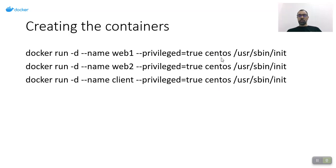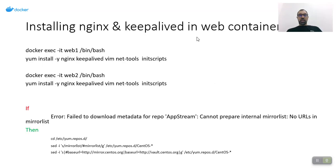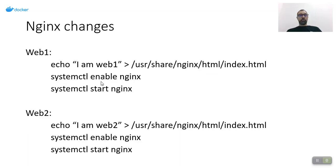I created three containers using docker run, named web1, web2, and web3. I used a CentOS image — you can use Ubuntu, CentOS, or any flavor. I installed nginx and keepalived. In CentOS 8, to do yum install I needed to make some changes to the yum repos because the mirror list was commented out, so I uncommented the mirror list and then installed nginx, keepalived, vim, net-tools, and initscripts. I installed the same packages in web2.